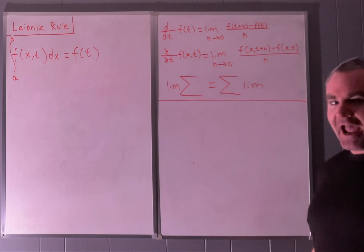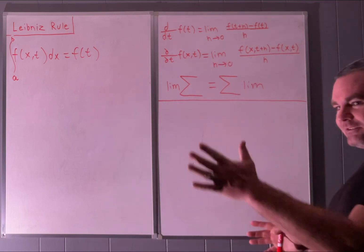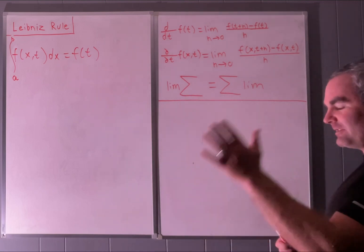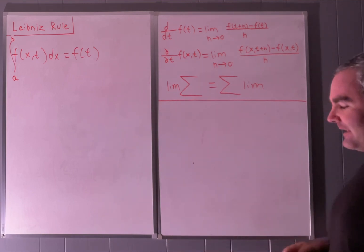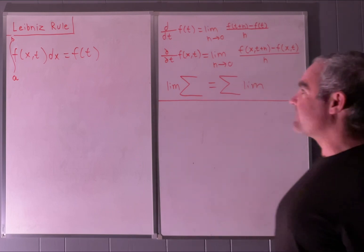Basically, if you add up a bunch of stuff and take the limit individually, like you take the limit of a sub 1, limit of a sub 2, limit of a sub 3, and then add them all up, it'd be the same thing as taking a sub 1, a sub 2, a sub 3 and then taking the limit afterwards. So that's all that says, and you learn that pretty early on in a calculus course. But let's just get started.